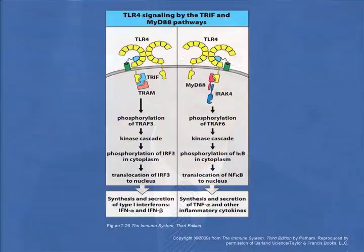So what do these toll receptors do? Well, there's a lot of complicated biochemistry, and I promised you I would spare you that. But think of them as performing one of two main functions. One, they can activate the NF-κB pathway, which is synonymous with inflammation, leading to a cascade of inflammatory mediators. The other is the interferon pathway. And as you know, this is important in antiviral immunity and other host defenses.